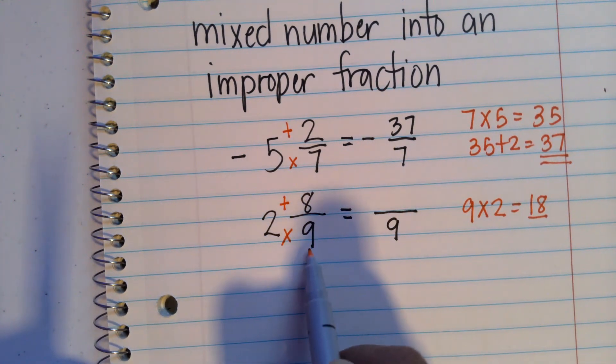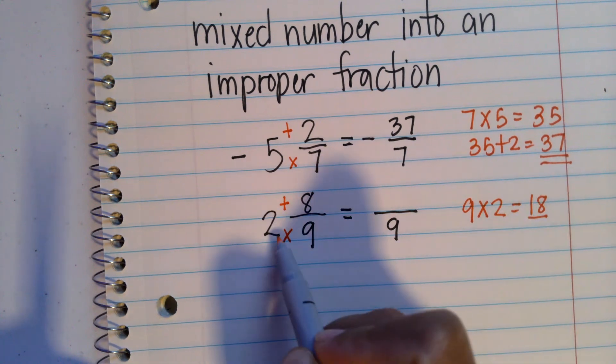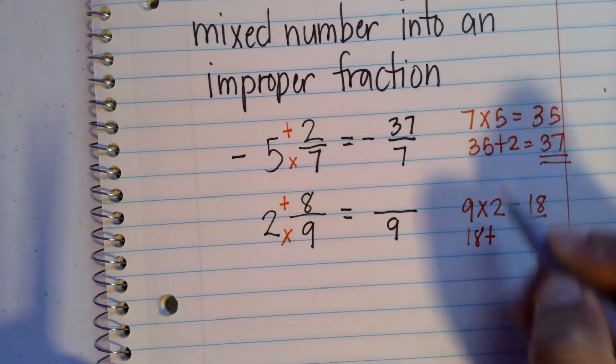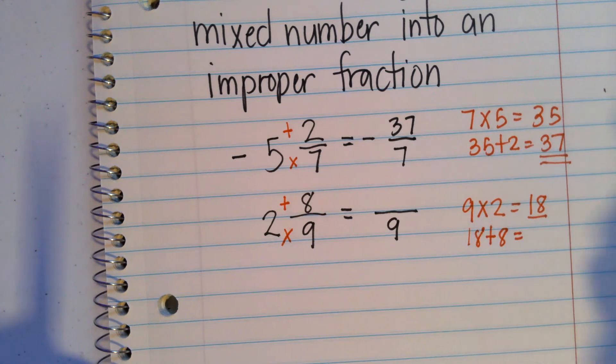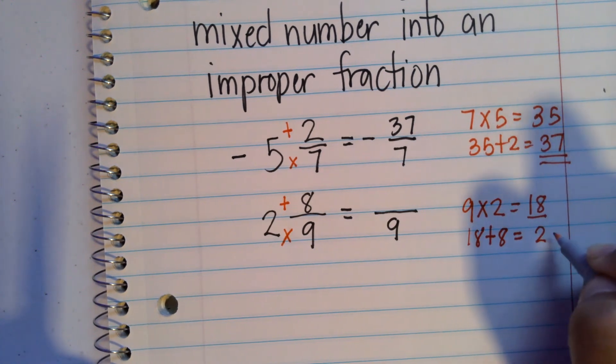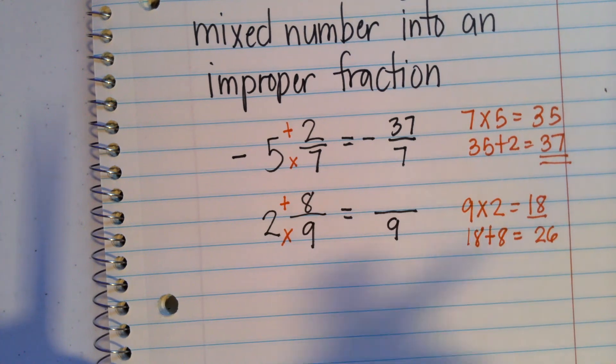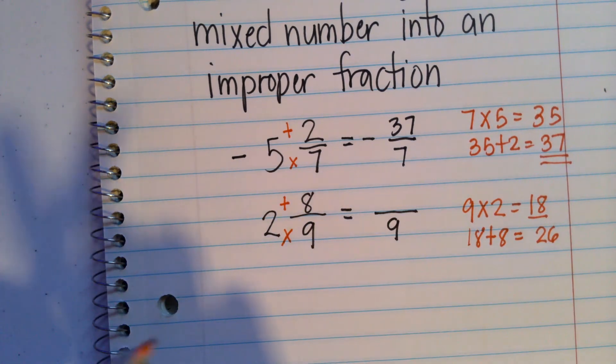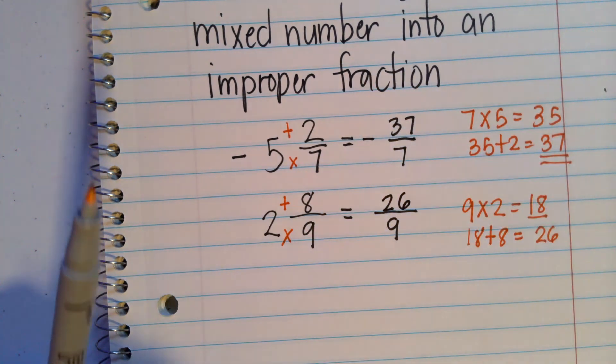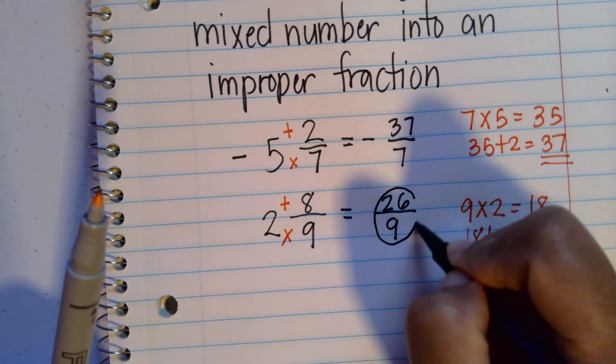So first, we multiply 9 by 2, which is 18. And we're going to add 18 to that numerator. So that would be 18 plus 8 is 26. And then the numerator now will become 26. So we have 26 over 9.